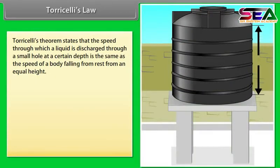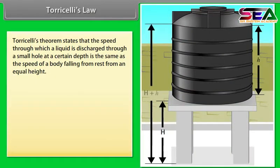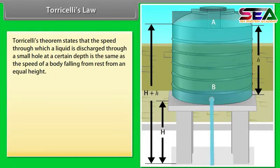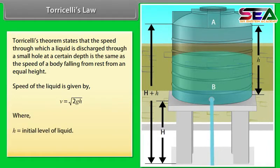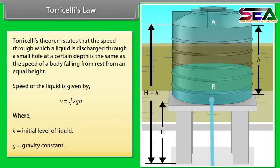Torricelli's law: Torricelli's theorem states that the speed with which a liquid is discharged through a small hole at a certain depth is the same as the speed of a body falling from rest from an equal height. The speed of the liquid is given by V = √(2GH), where H is the initial level of the liquid and G is the gravitational constant.